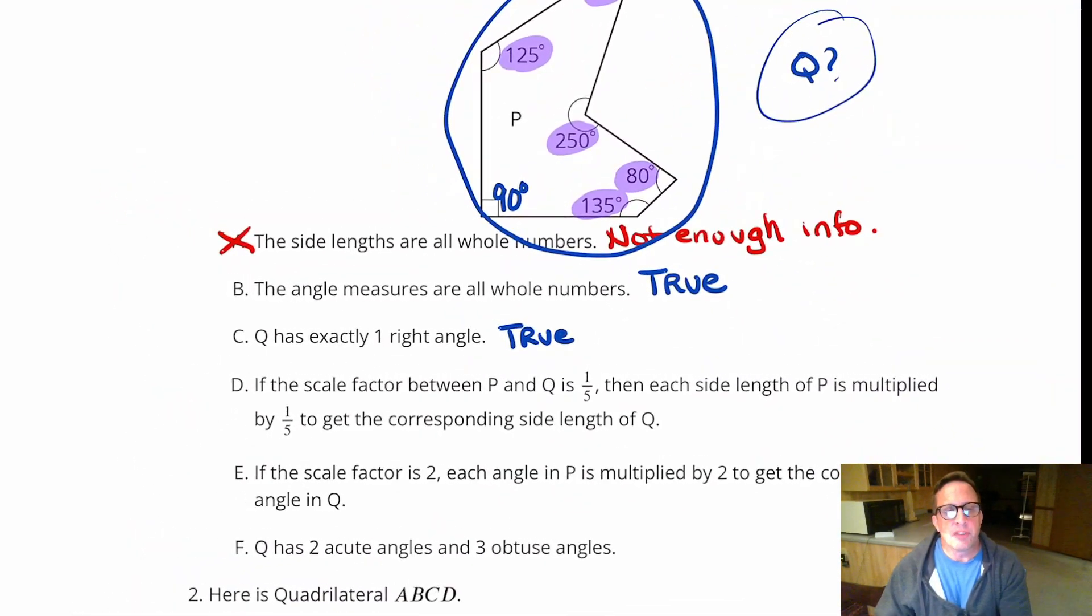All right, so if the scale factor between P and Q is 1/5, then each side of P is multiplied by 1/5 to get a corresponding side. Yeah, that's how scale factor works. So that is true.